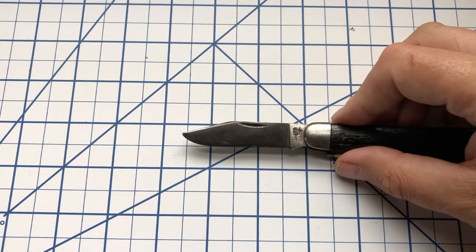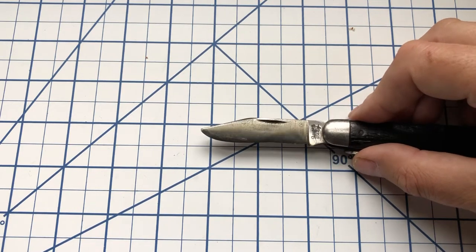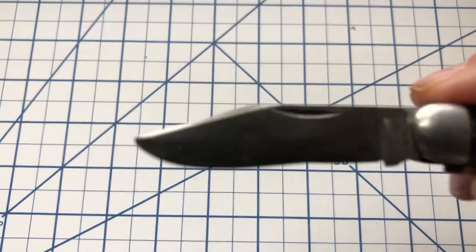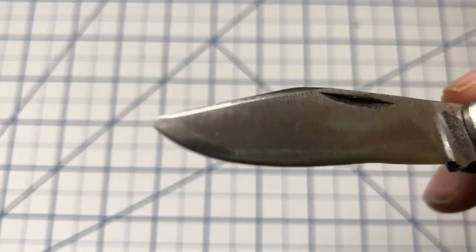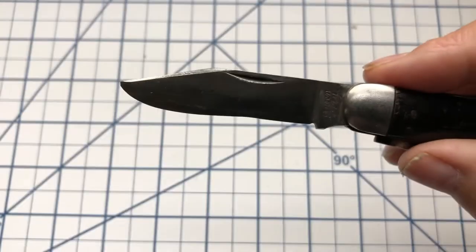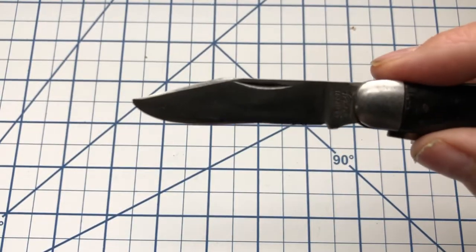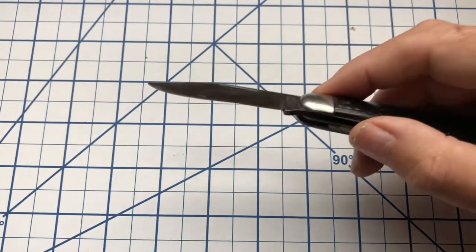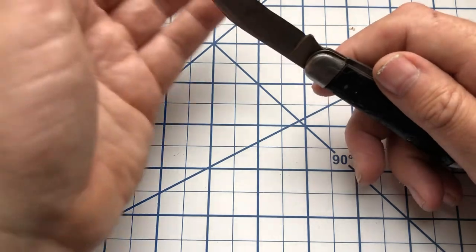The blade length on this is a little over two and a half inches. Cutting edge about two and a quarter inches on the main blade. You can see that the tip of this has been broken off and it has had a fair amount of use. It's got a little bit of a recurve that's been put in it from the use over the years.